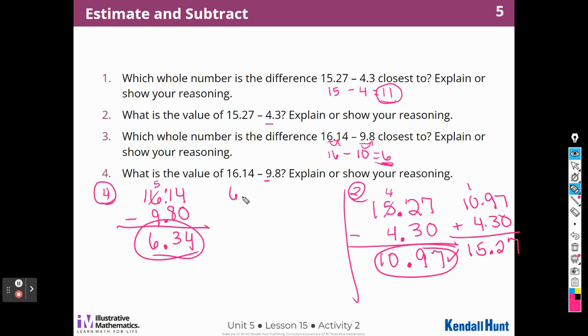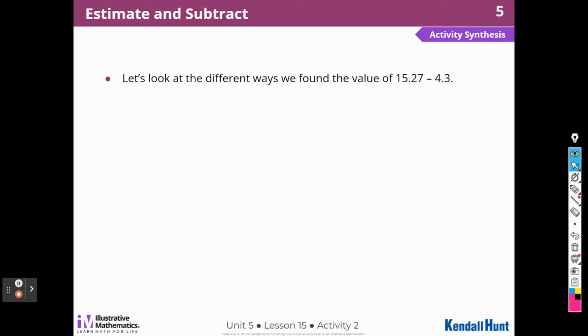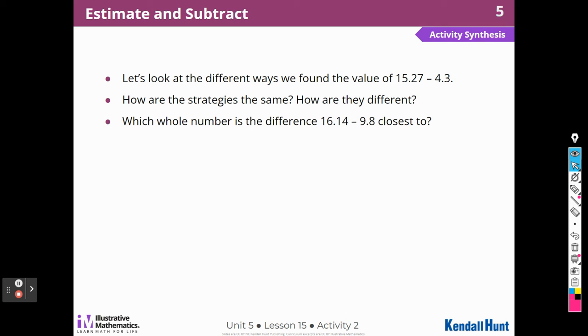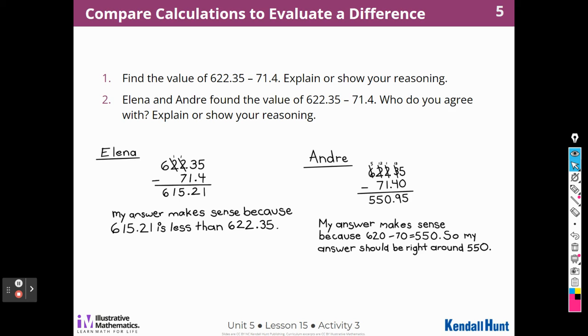And I can check that again by lining up those decimal places and adding to check. 3 and 8 is 11, nice dark decimal point, and that's going to be 16. Did I get 16 and 14 hundredths? Yes. So I got the right answer. Alright, let's see what they have for us next. So now you're going to compare the different ways that you found the answer to this problem. We already decided that it was closest to 6. And the estimate did help me because it helped me to check my work. All right.